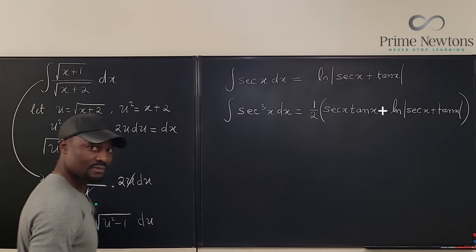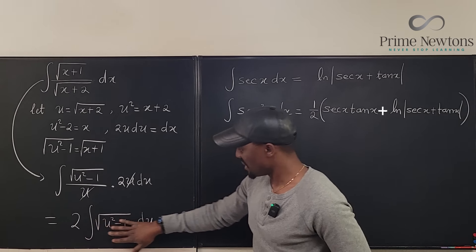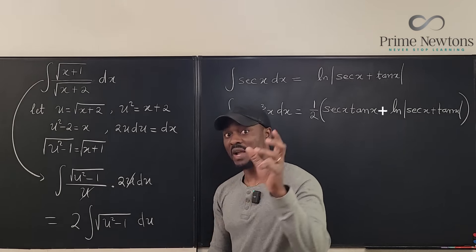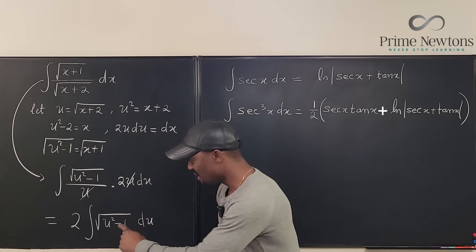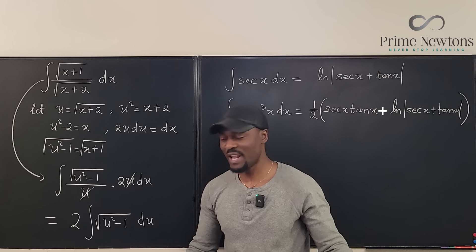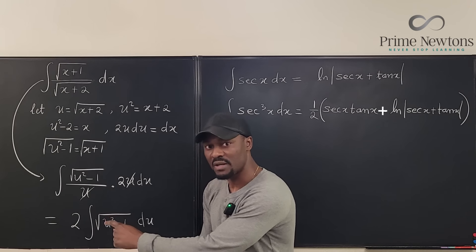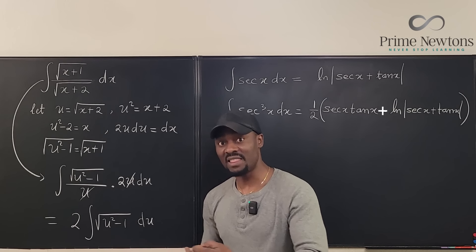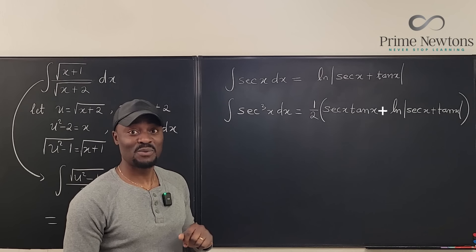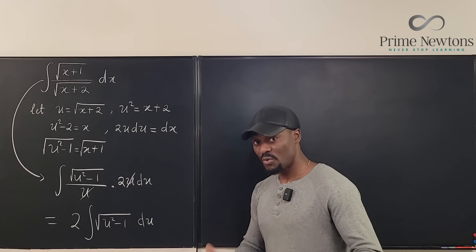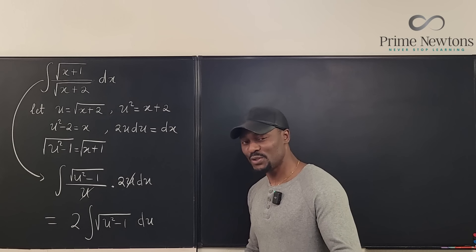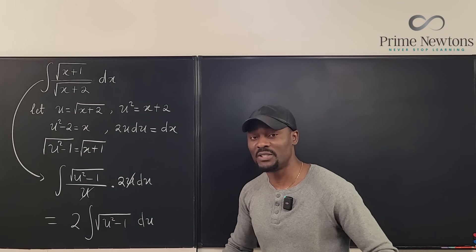This crazy expression has easily become 2 times the integral of the square root of u squared minus one du. Whenever you see a variable squared minus a constant like this, you should think that u must be secant, because secant squared minus one is tangent squared. So we replace u with secant theta.